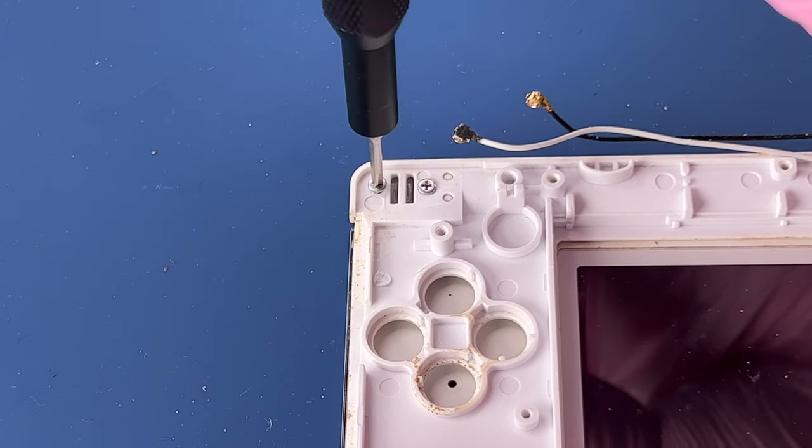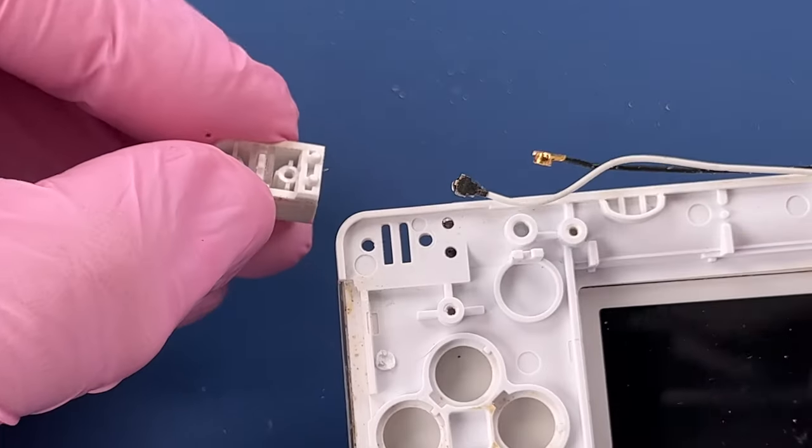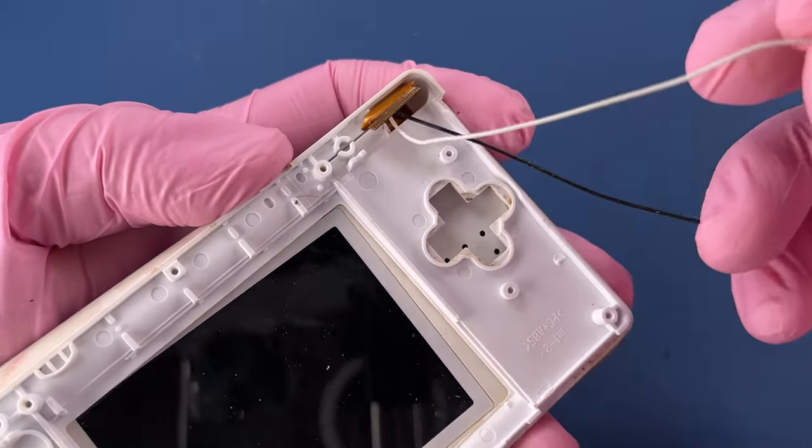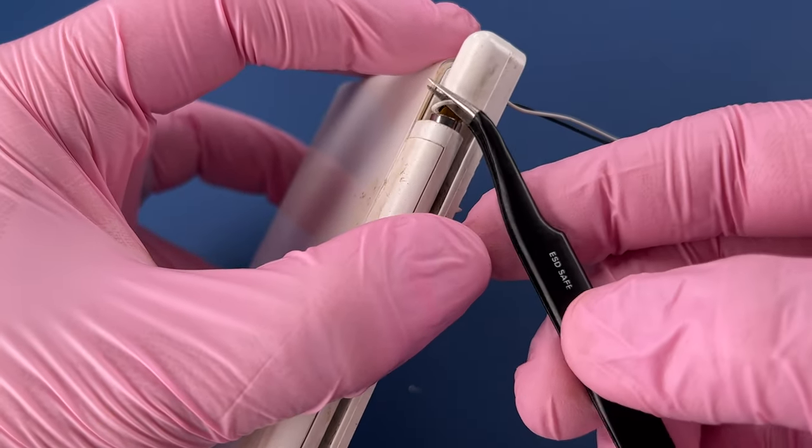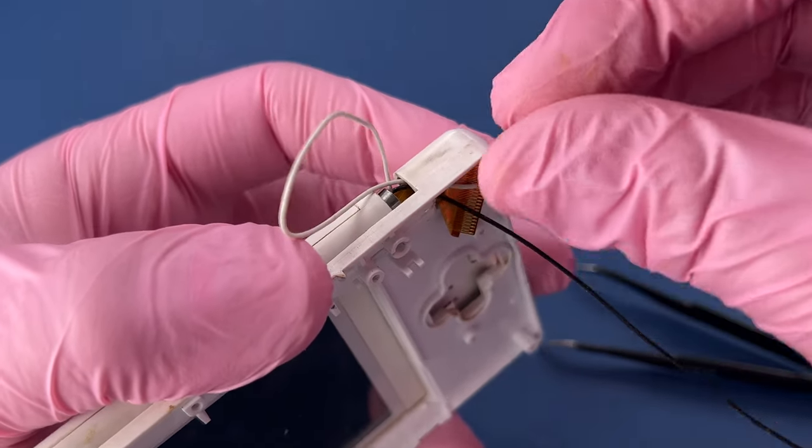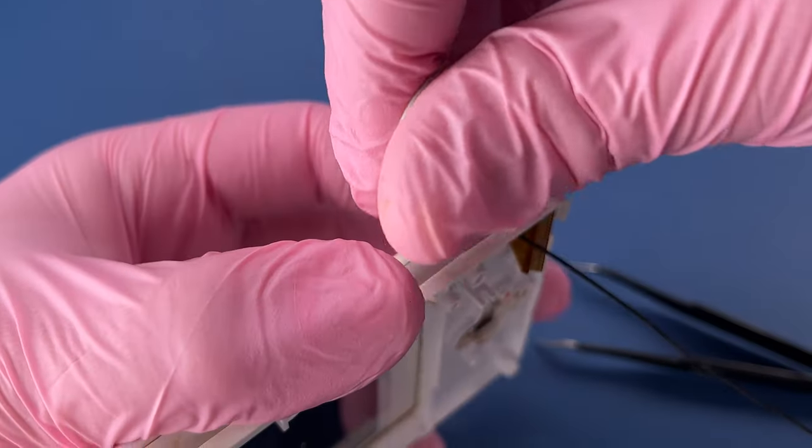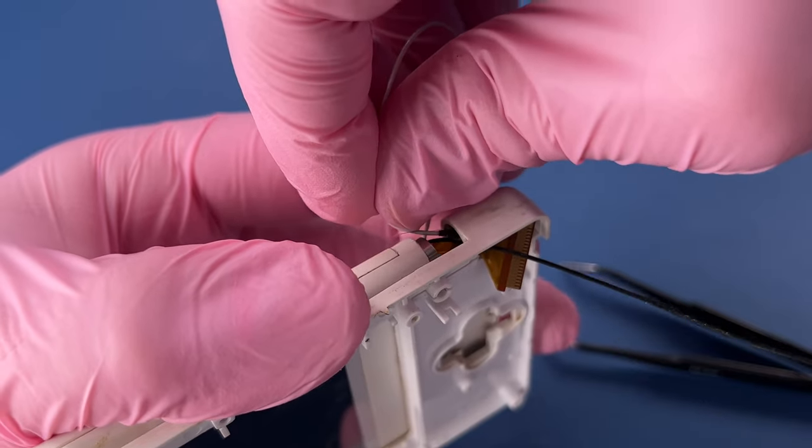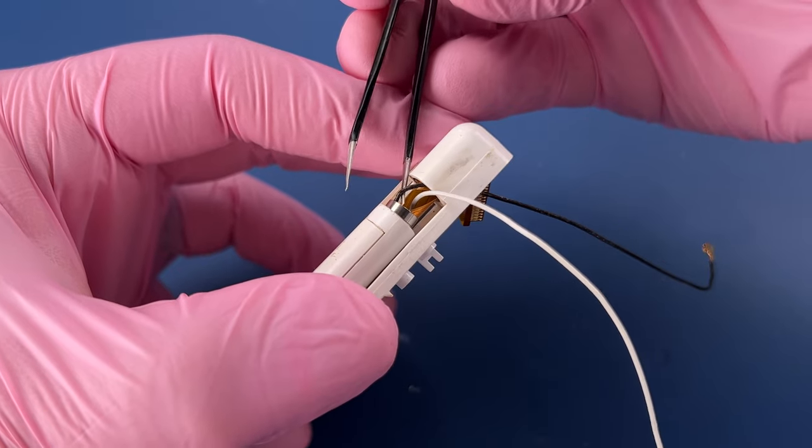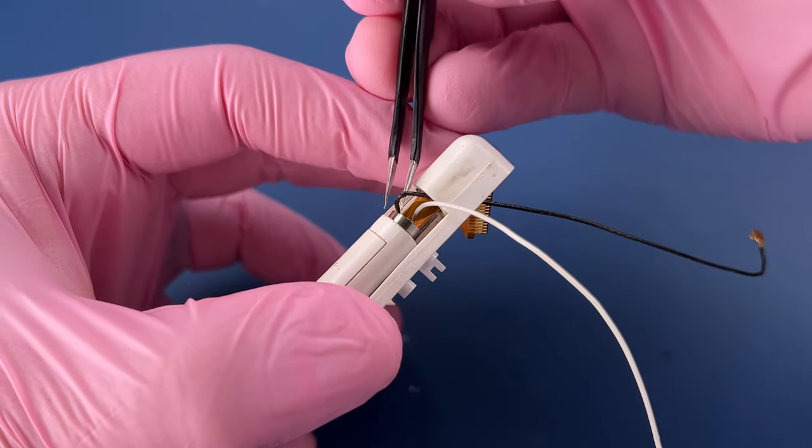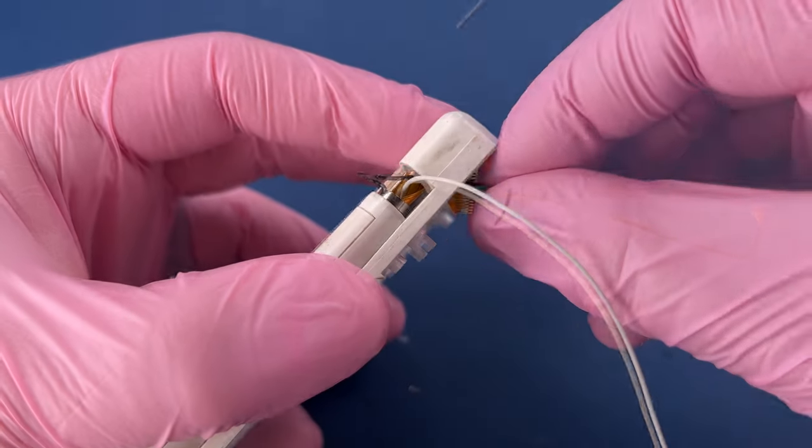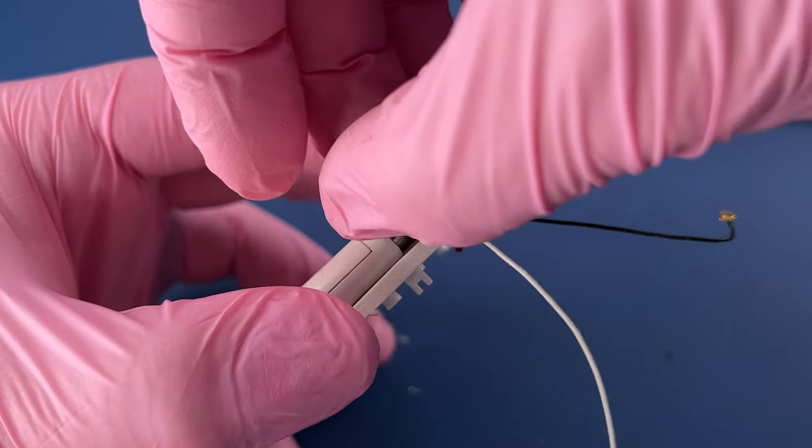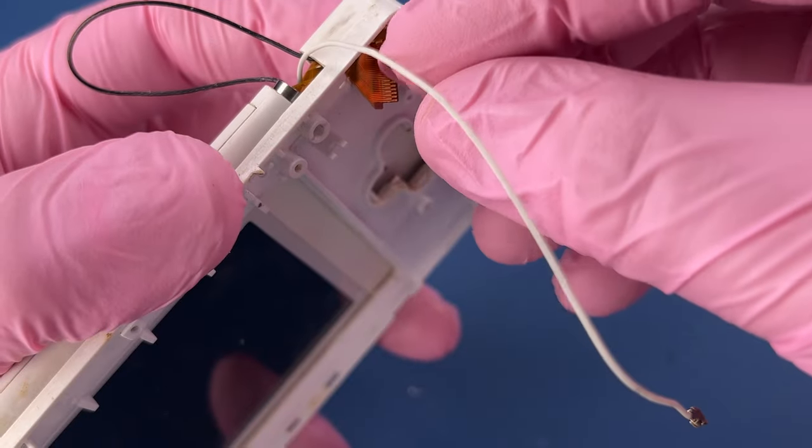All right, now we're kind of getting to the most fun part of this teardown and the reassembly - working with the hinge system on these DS's and 3DS's. Super fun. I'm going to pull these two wires through here first and just kind of get them out of the way, and then we'll deal with the ribbon cable.